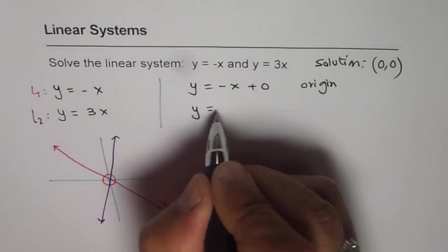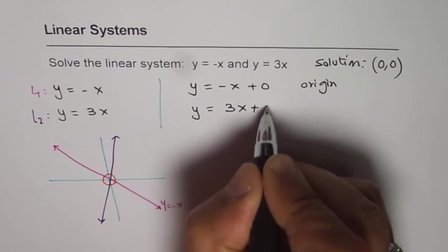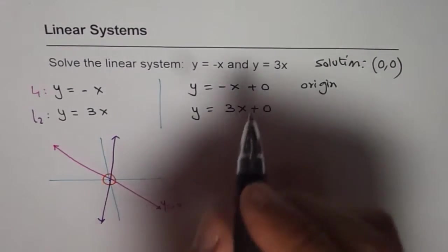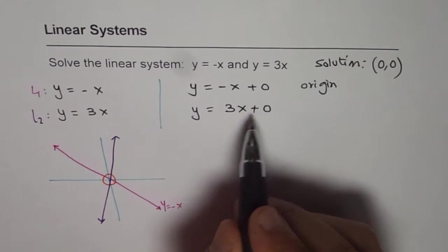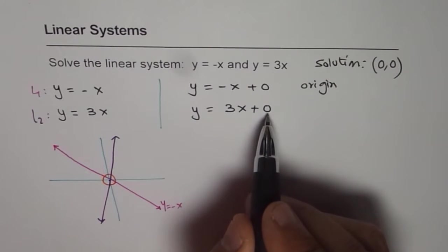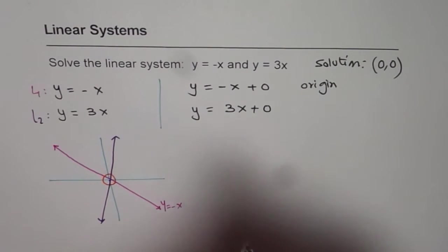For the second one also, it is 3x plus 0. So if you write it in slope intercept form, slope is 3 and the intercept is 0 which is origin.